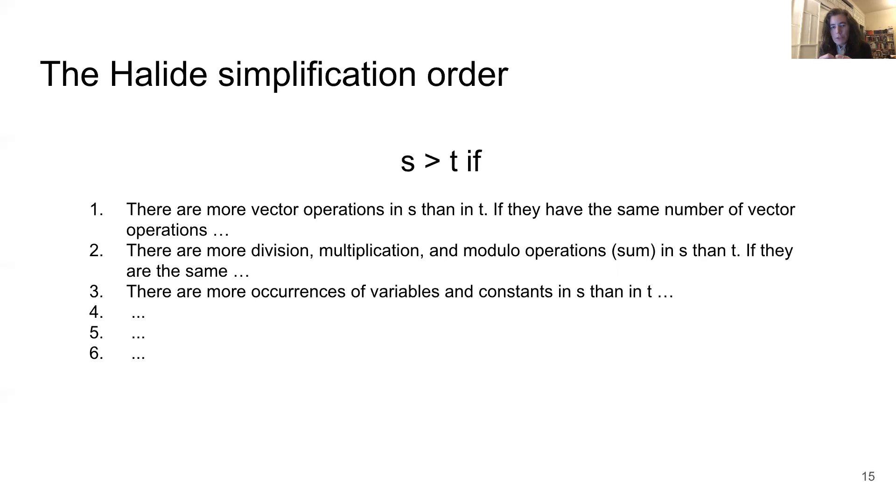We realized as we were working on this that we were not just proving termination because any strict order would have given us a termination guarantee. The ordering we were devising was actually capturing something really interesting about the rules themselves. The purpose of the term rewriting system is to simplify expressions. But the notion of what it means for an expression to become simpler is imprecise. It encompasses a lot of different goals. For example, Halide developers want expressions to become shorter. They would like to do strength reduction, replacing expensive operations with cheaper ones. They would like to group constants so they can do constant folding and so on. You'll see in this compositional reduction order that we've defined, all these different goals are captured precisely and placed into this priority. So now we've formalized exactly what simplification means. That's going to set us up really well for our last task, which is rule synthesis.